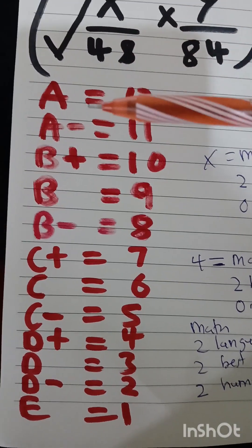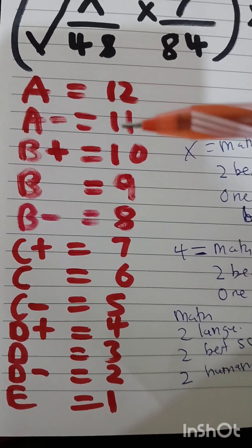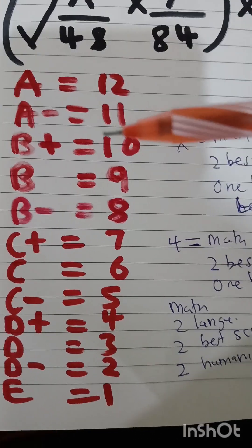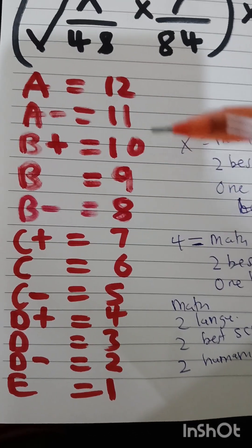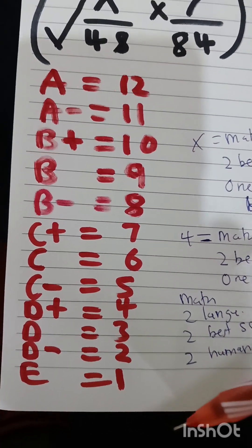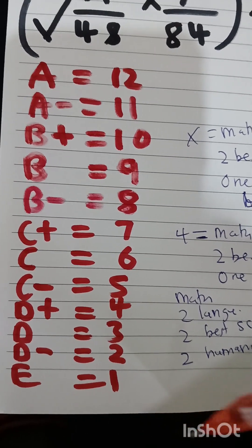And each grade has its own points. So for grade A, it's equivalent to 12 points, A minus 11 points, B plus 10 points, until the lowest grade, grade E, which has one point.